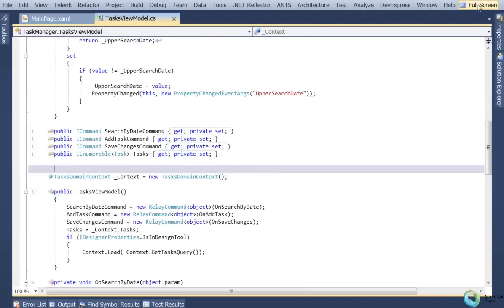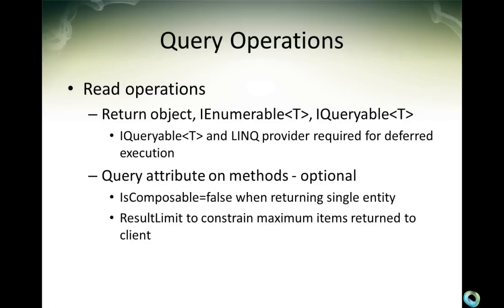Let me jump back to the slides to make sure we didn't miss any key concepts on the query side. As far as query operations are concerned, the service methods in your domain service class can either return a single object, an IEnumerable of T, or an IQueryable. If you return an IEnumerable of T, you'll have to load the whole collection into memory in your service method and have no opportunity to pass the filtering down to the database. If you expose things as an IQueryable and have a LINQ provider like Entity Framework, that expression tree is actually passed all the way down to the LINQ provider, causing Entity Framework to generate the right SQL statements so filtering actually happens in the database through efficient set operations. Query attributes are not required but you can put them to do things like result limit to constrain the maximum number of items returned.